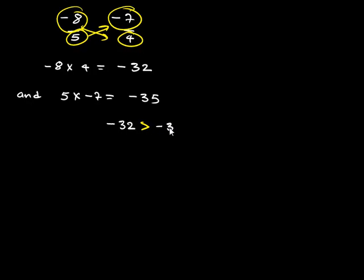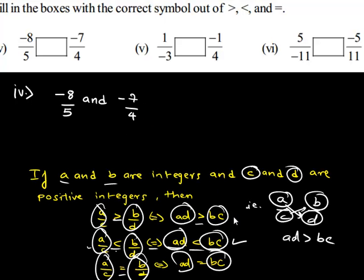Clearly, negative 32 is greater than negative 35. Therefore, negative 8 upon 5 is greater than negative 7 upon 4. According to the first case, a×d is greater than b×c, so a upon c is greater than b upon d. In the blank, we get a greater than symbol.